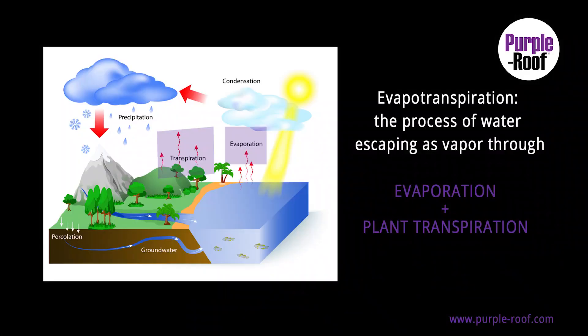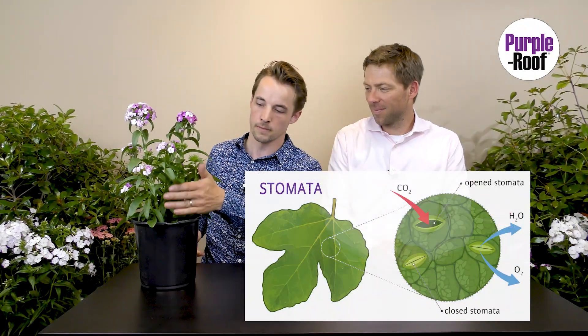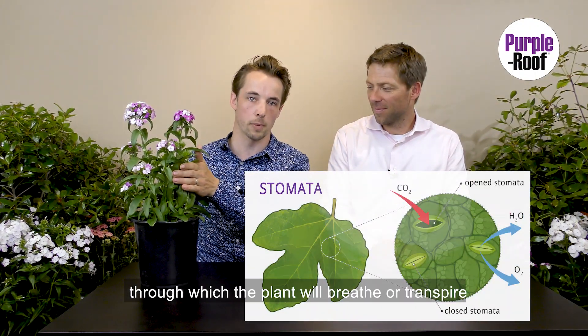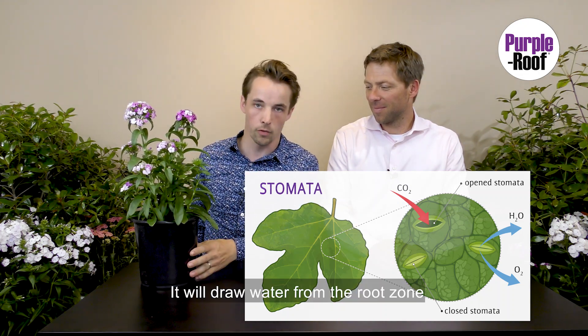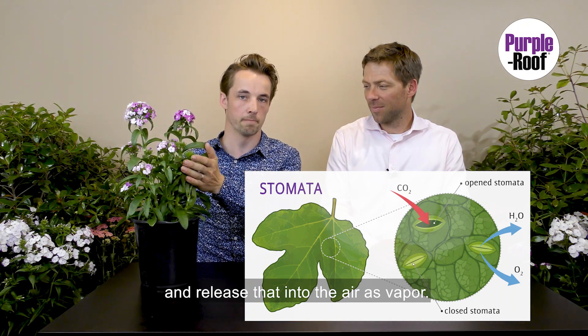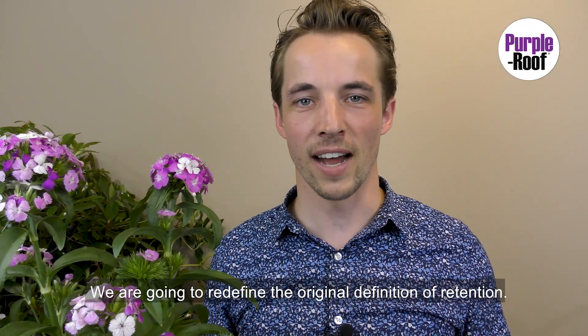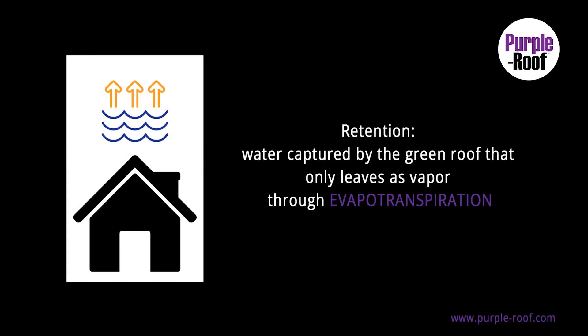Evapotranspiration is the process of water escaping as vapor through evaporation plus plant transpiration. Plants have pores underneath their leaves called stomata, through which the plant breathes or transpires to release vapor into the air. It draws water from the root zone and releases it into the air as vapor. We are going to refine the original definition of retention.